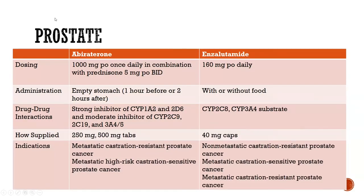The dosing is listed on the slide. Some of these come in different tablet sizes — something to note for the prostate cancer population, who tend to be a bit older and may need more reinforcement to make sure they're taking the correct number of tablets or capsules. Abiraterone is used in combination with prednisone; enzalutamide is used by itself. Administration is listed — the empty stomach requirement can really set up patients for confusion, especially those with a solid regimen at home. Drug-drug interactions should be watched; your clinic pharmacist will be looking for those.